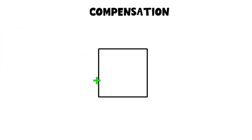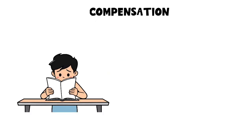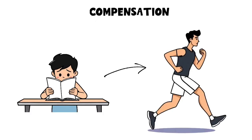Compensation. This mechanism involves overachieving in one area to make up for perceived weaknesses in another. A student who struggles academically might become a star athlete to balance their self-esteem.